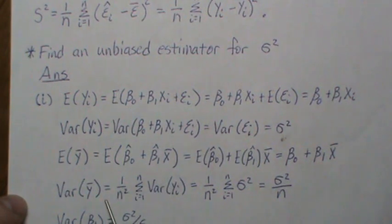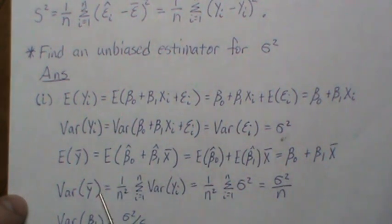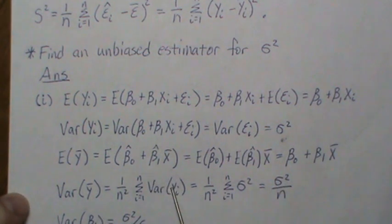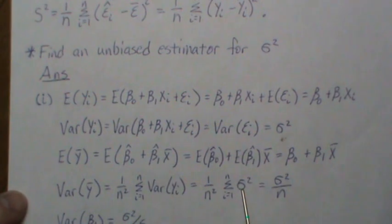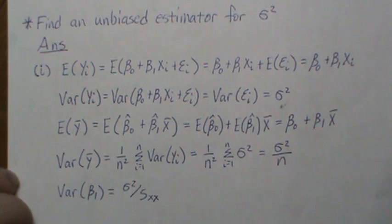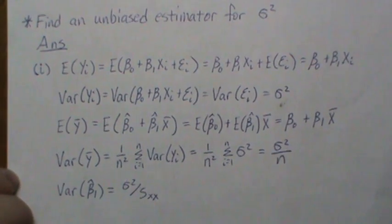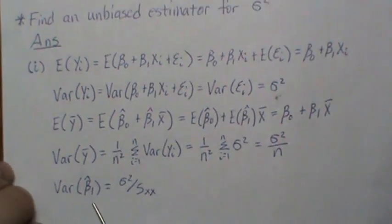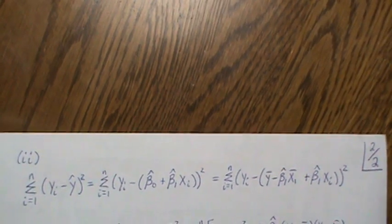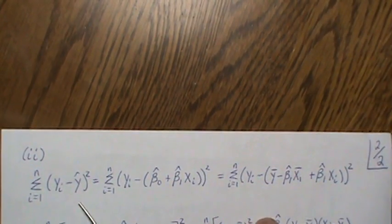The variance of y-bar: since y-bar is the sum of yi divided by n, the 1/n comes out squared, and because the yi's are uncorrelated the covariance terms vanish, leaving the sum of variances. Each variance is sigma squared, so summing n of them and canceling one factor of n gives Var(y-bar) = sigma squared over n. The variance of beta one hat is sigma squared over Sxx, as derived in a previous video.